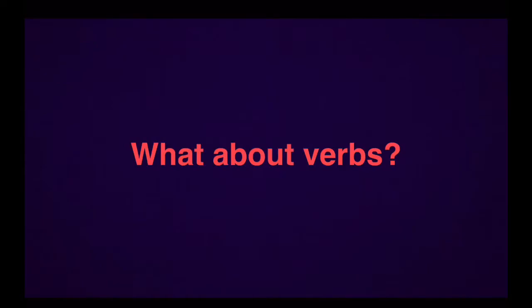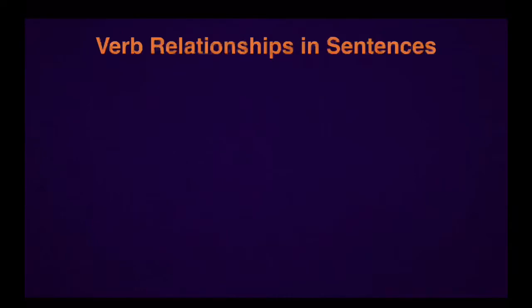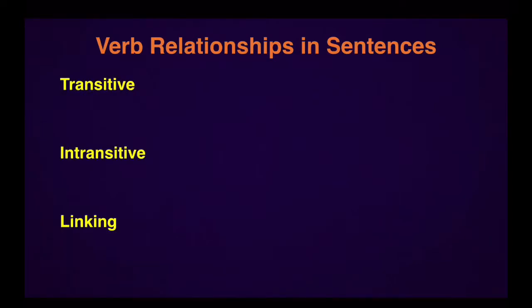So what does all this have to do with verbs? In this lesson we're going to look at the relationship of the verb in a sentence to the other parts of the sentence — for example, the subject and the object. So to do this we describe verbs in three ways: we can have transitive verbs, intransitive verbs, or linking verbs.